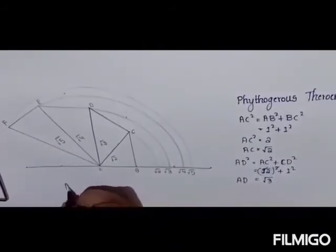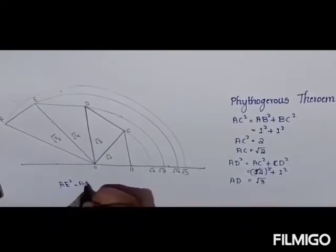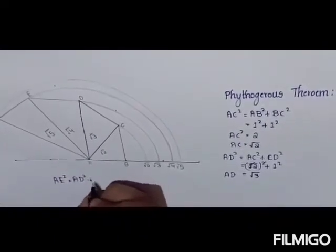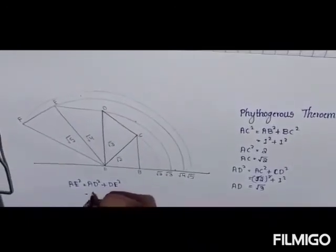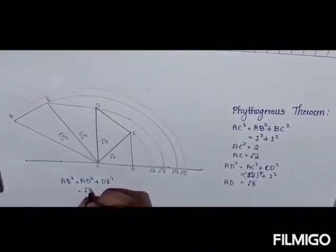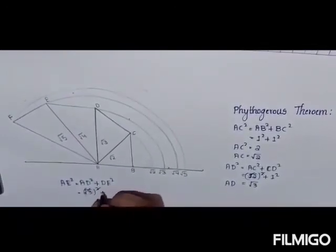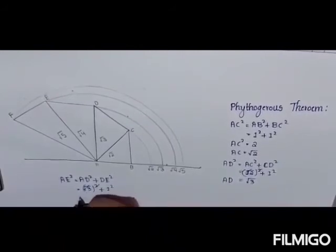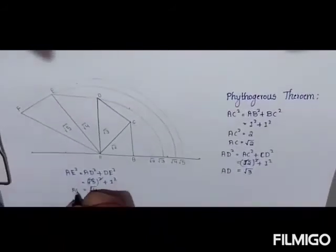Then AE² equals AD² plus DE², which will be equals to root 3 whole squared. Root and whole square get cancelled and 1², which equals root 4. So AE equals root 4.